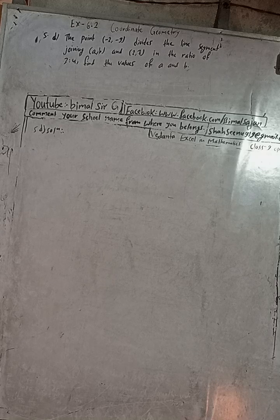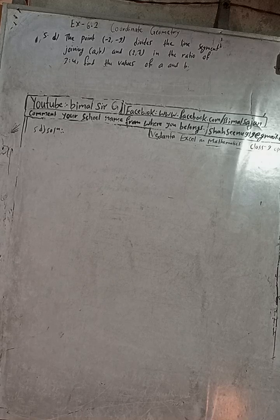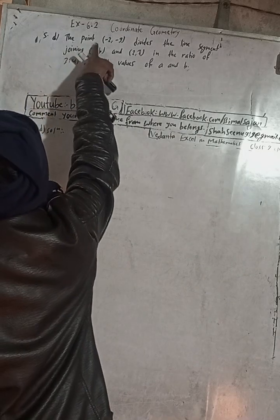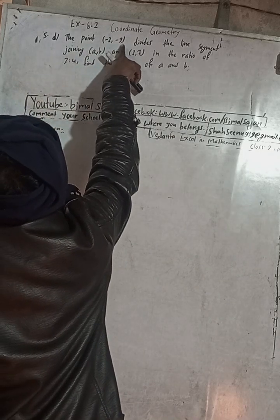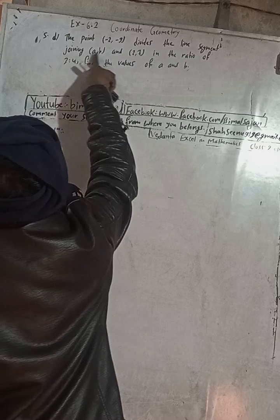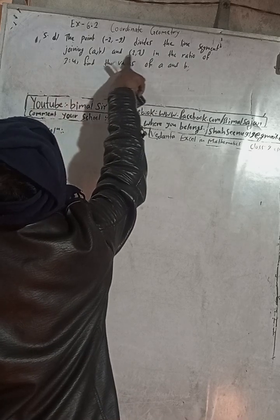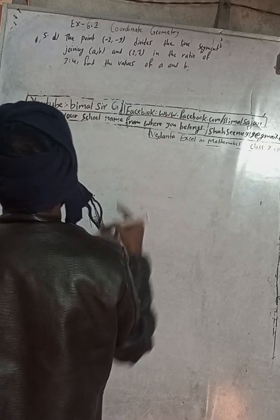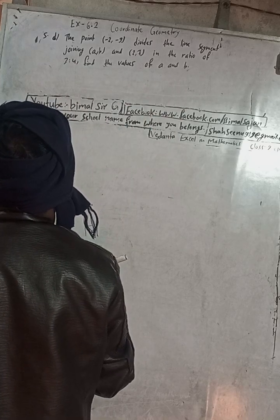Okay, now this is question 5d of exercise 6.2, Coordinate Geometry, Vedant X, optional mathematics class 9. Here the question is: the point (-2, -9) divides the line segment joining (a, b) and (2, 7) in the ratio 3:4. Find the values of a and b.